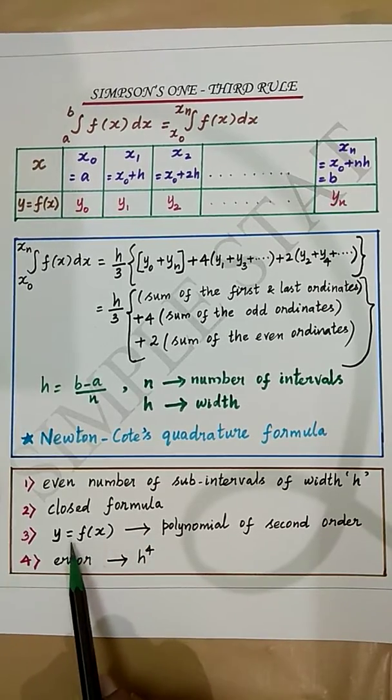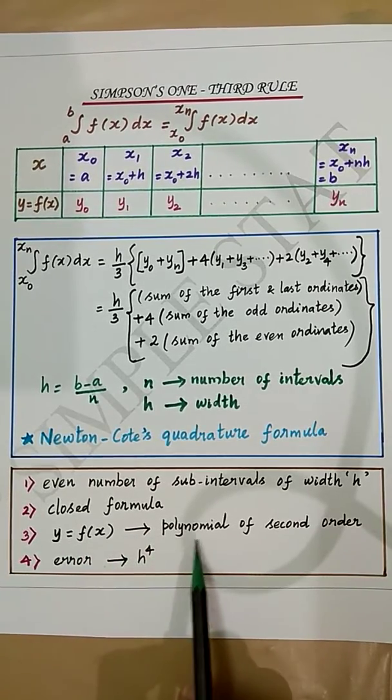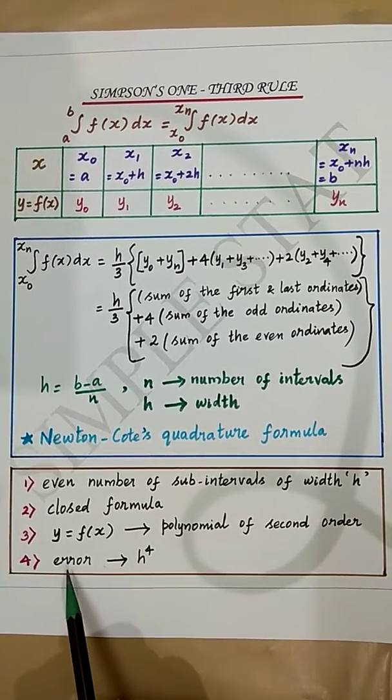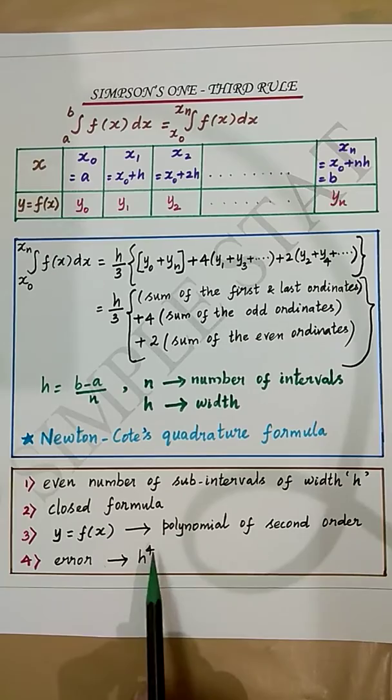In this rule, y = f(x) is a polynomial of second order, and the error in this rule is of order h⁴.